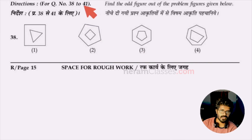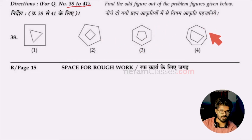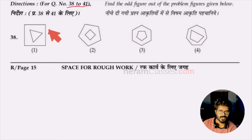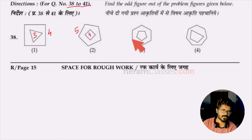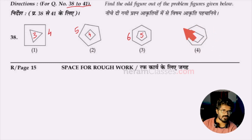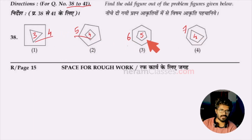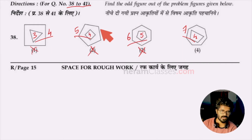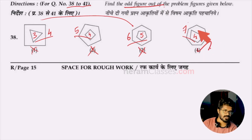Questions 38 to 41 require finding the odd figure — three options share a relation and one is odd. For question 38, looking at the outer surface: option A has 4 polygons outside and 3 inside, one has 5 outside and 4 inside, another has 6 outside and 5 inside — each time it's one less inside. But option four has 7 outside and only 4 inside, which breaks the pattern. So option four is the odd figure.